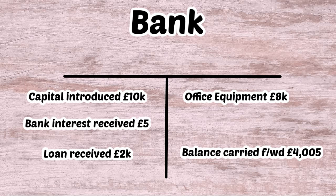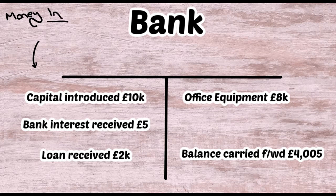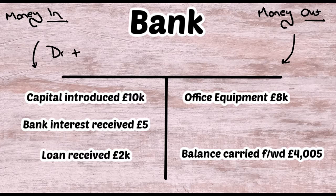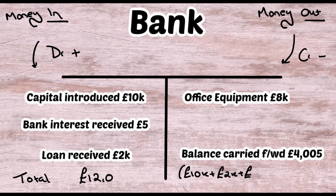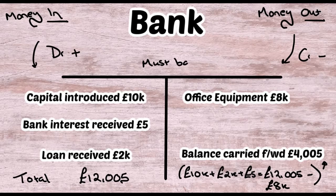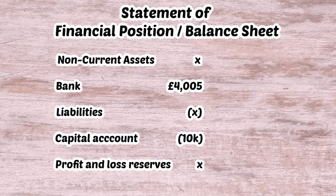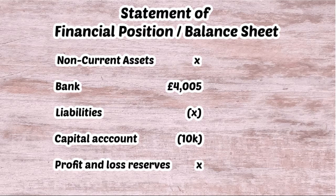Once we complete the T account we see a balance carried forward of £4,005. This is worked out by taking the debits — capital £10,000, loan £2,000, and interest £5 — totalling £12,005 on the left, then subtracting the office equipment £8,000 on the right, so both sides balance at £12,005. On the statement of financial position, non-current assets appear at the top, and the bank shows as an asset of £4,005.